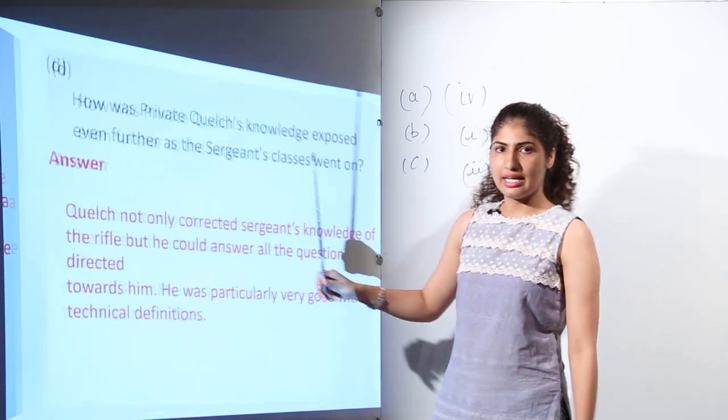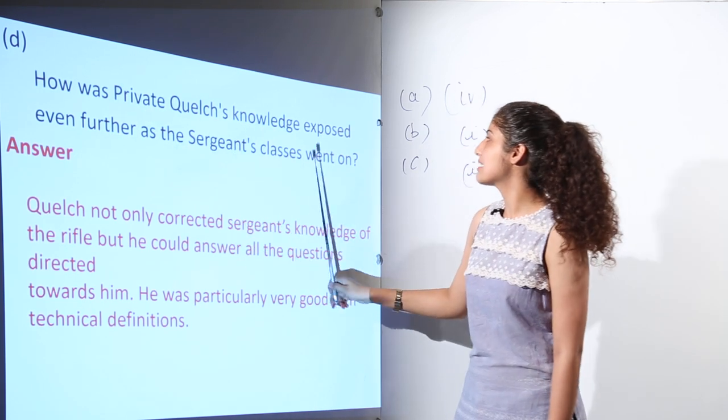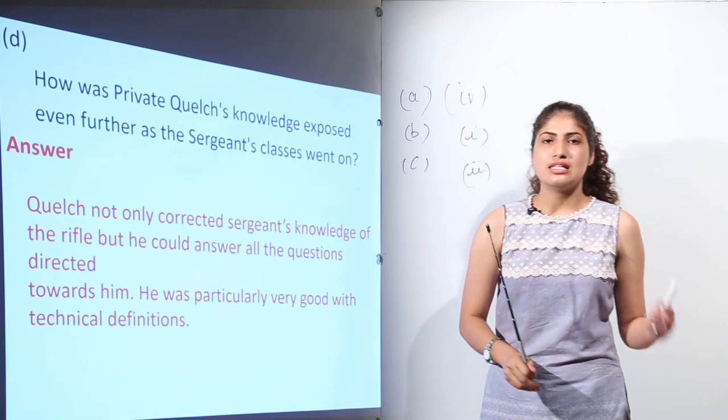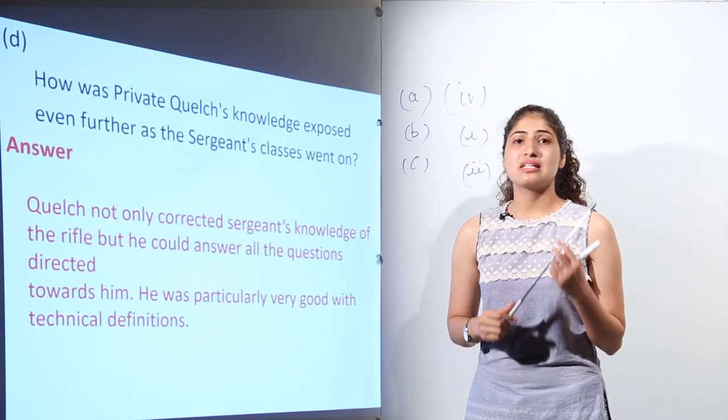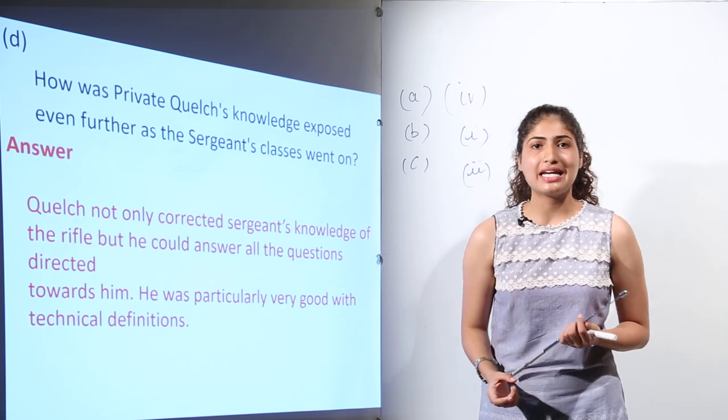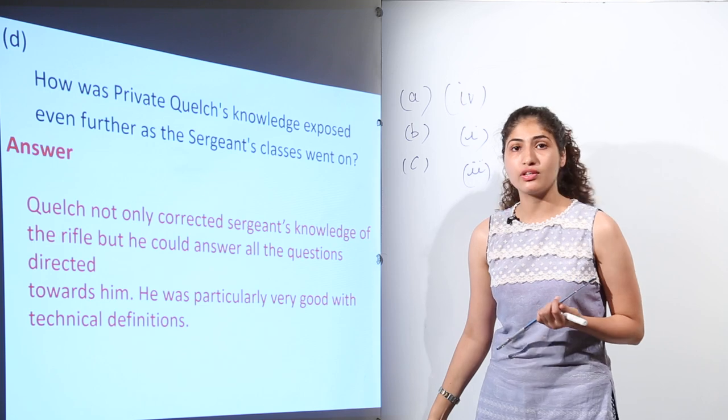Moving on to the next question. How was Private Quelch knowledge exposed even further as the sergeant's class went on? When the sergeant was telling about the muzzle velocity, he said that the muzzle velocity or the speed with which a bullet leaves the rifle is 2440 feet per second.